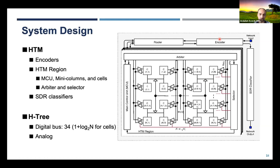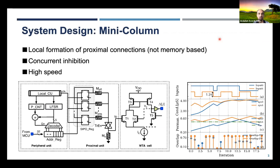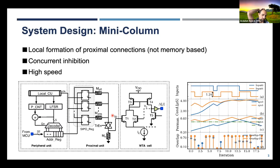Now we talk about the individual processing element. This is the mini column circuit. We locally formulate all the approximate connections — it is not memory-based, so it highly relies on LFSRs. The inhibition, which was identified as one of the bottlenecks, can happen concurrently within the region thanks to the winner-take-all circuit that each mini column has. A lot of operations are happening in parallel — such as overlap computation during synaptic connection — and this parallelism gives a lot of speedup.